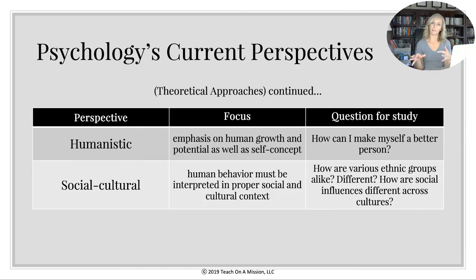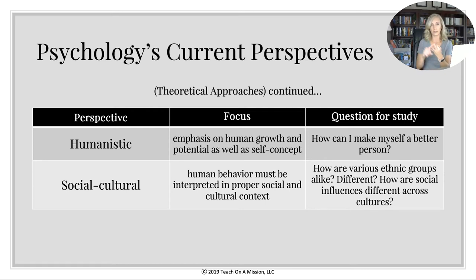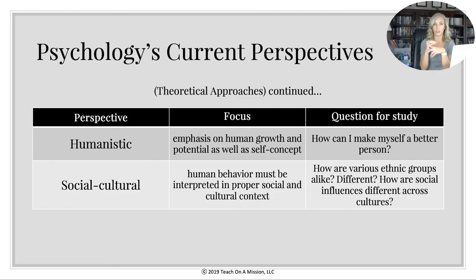Humanistic — these are like the hippies of psychology in that they believe everyone has the potential to fulfill their greatest potential. Everyone has free will, and we're all striving for self-actualization. The buzzwords are free will, full potential, and self-actualization. Really anything that has to do with the self — self-esteem, self-worth — all has to do with humanism. They emphasize human growth and potential as well as self-concept.